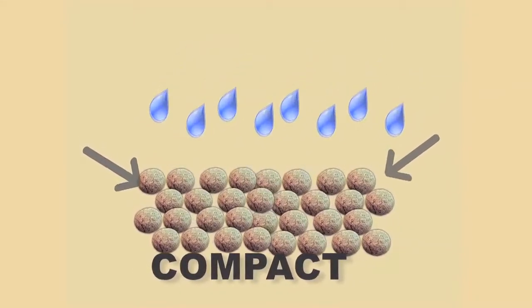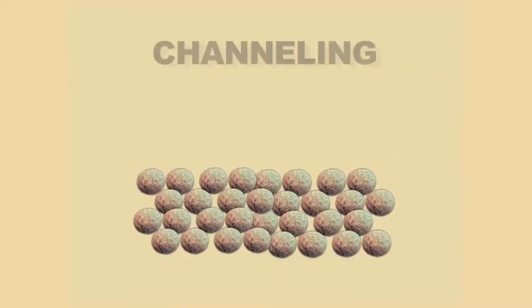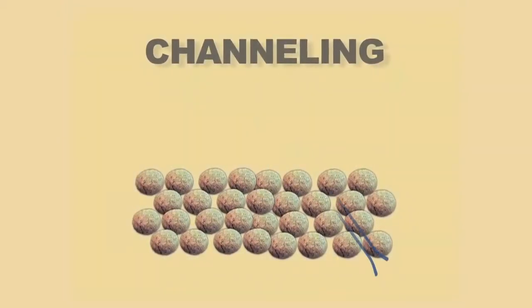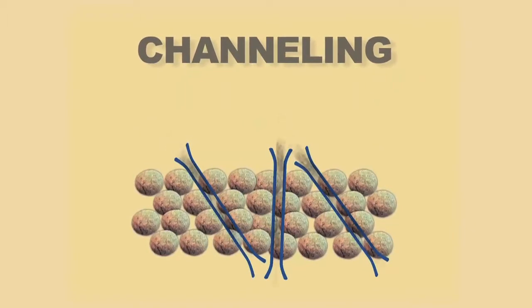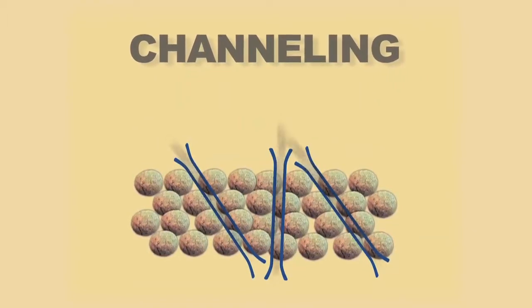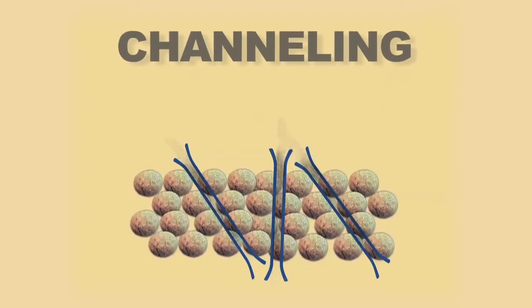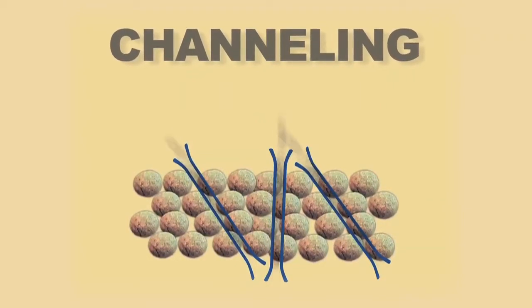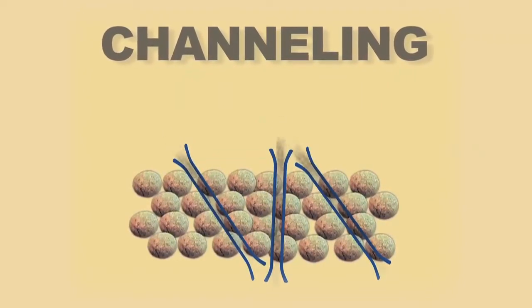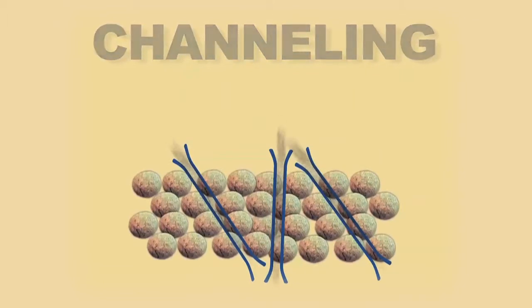When the media compacts, two things happen. Channeling is the first. This means that channels of air through the media are formed and odor and VOCs start escaping, leaving other areas of the biofilter without airflow and thus a food source for the bacteria. This forces the bacteria to migrate.